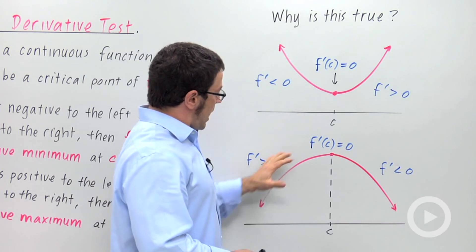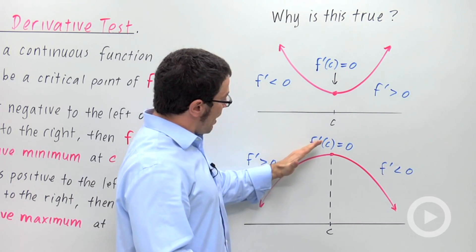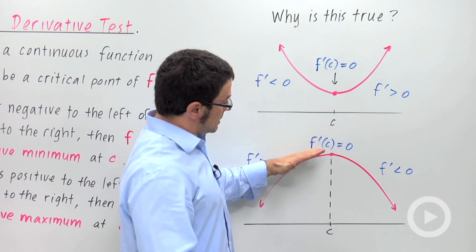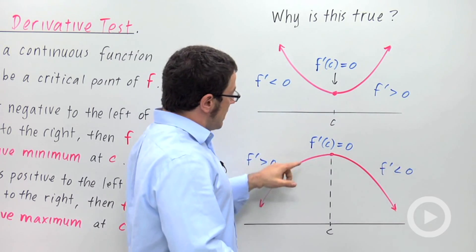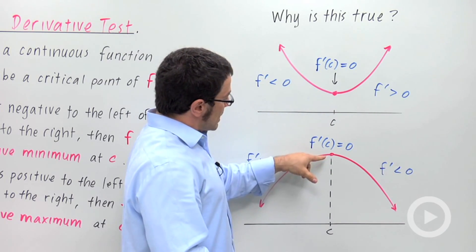And here is the opposite situation. You have the derivative going from positive to the left of c to negative to the right. In the middle, you've got a relative maximum.